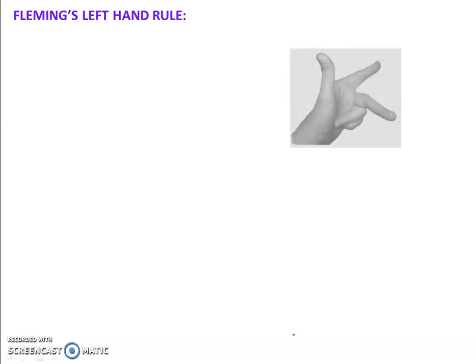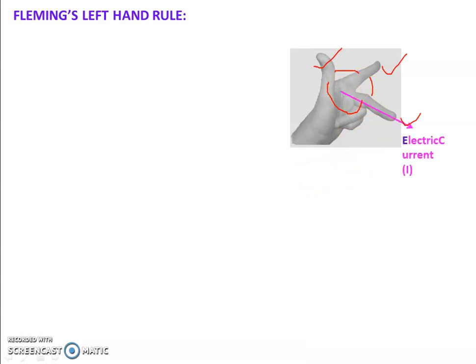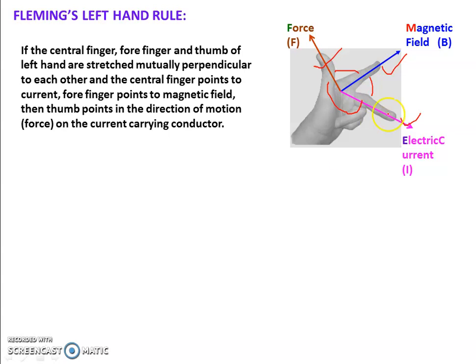Now coming to the next topic: Fleming's Left Hand Rule. We should keep our thumb, forefinger, and middle finger perpendicular to each other — 90 degrees between each pair. The direction of force is identified by the direction of the thumb. The forefinger indicates the direction of the magnetic field, and the middle finger represents the direction of electric current. This is called the FBI rule: F means Force, B means magnetic field, and I is electric current.